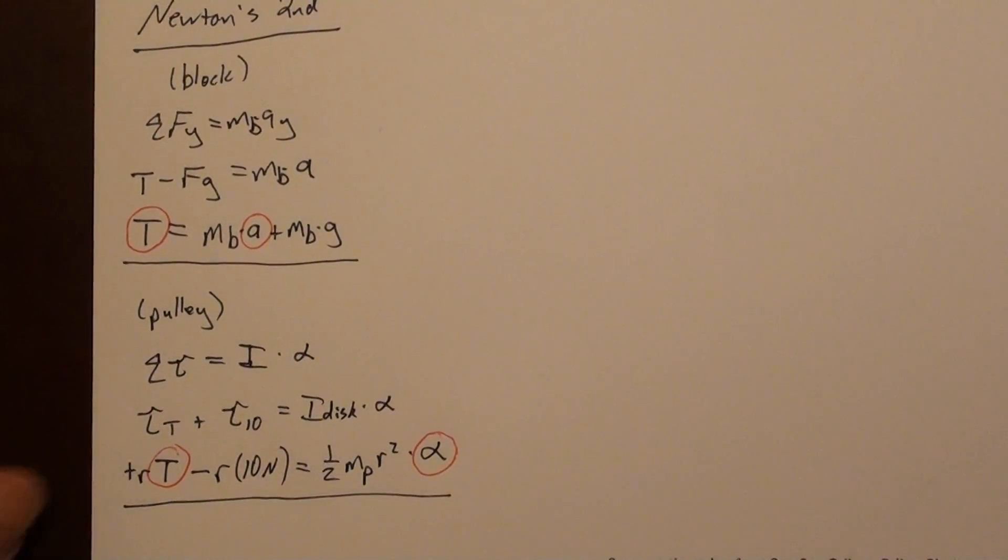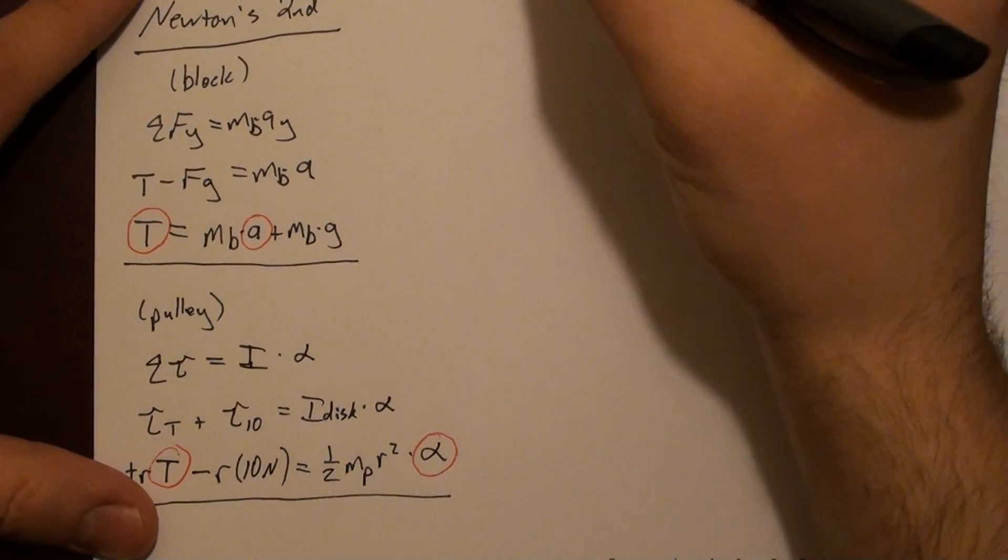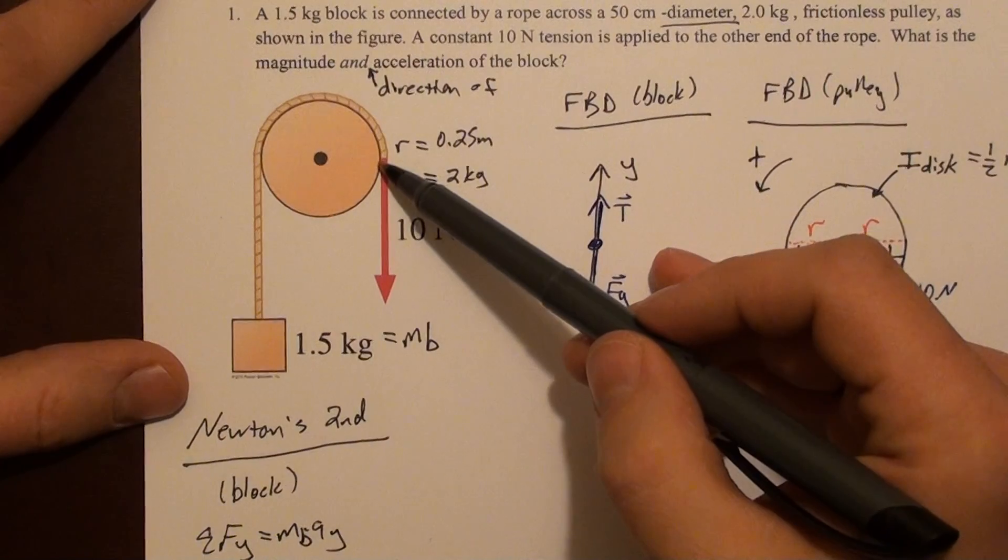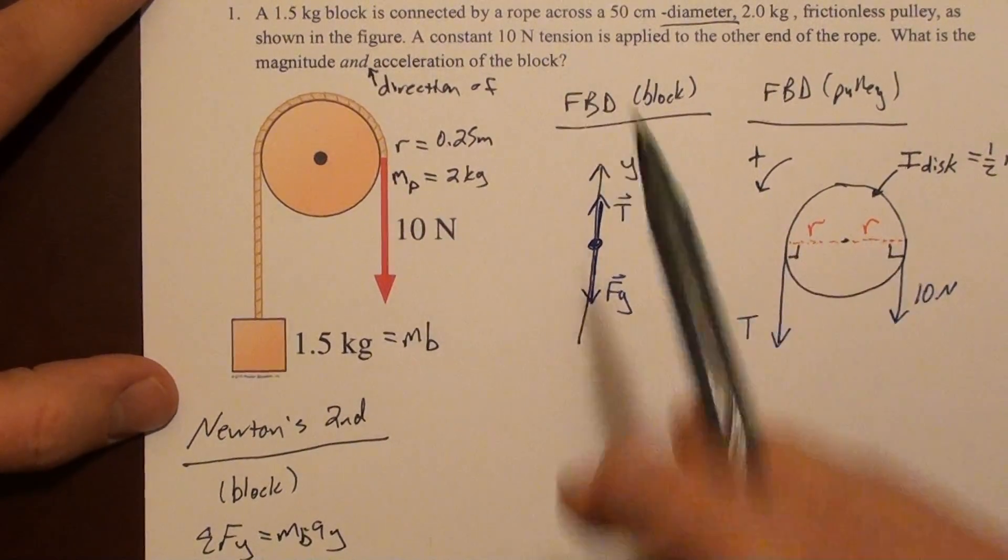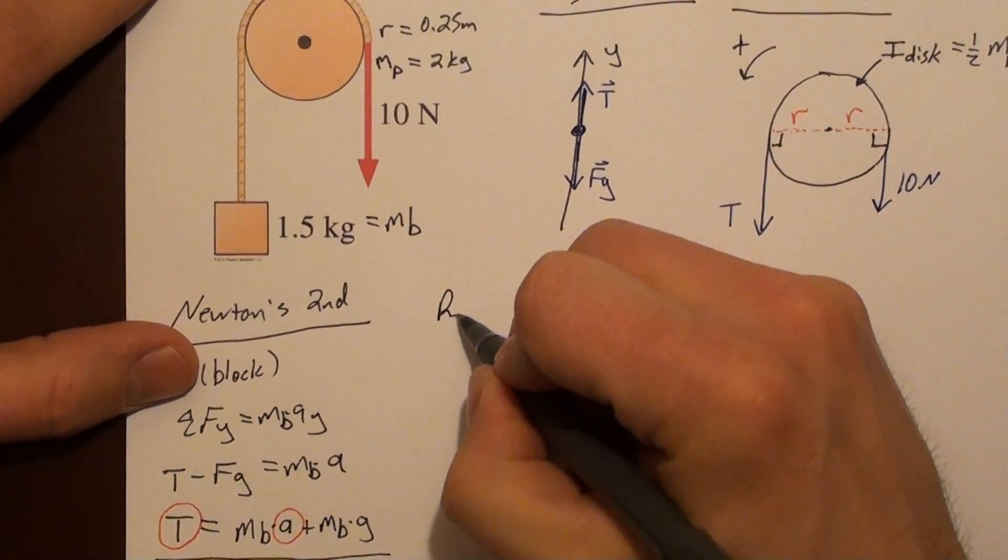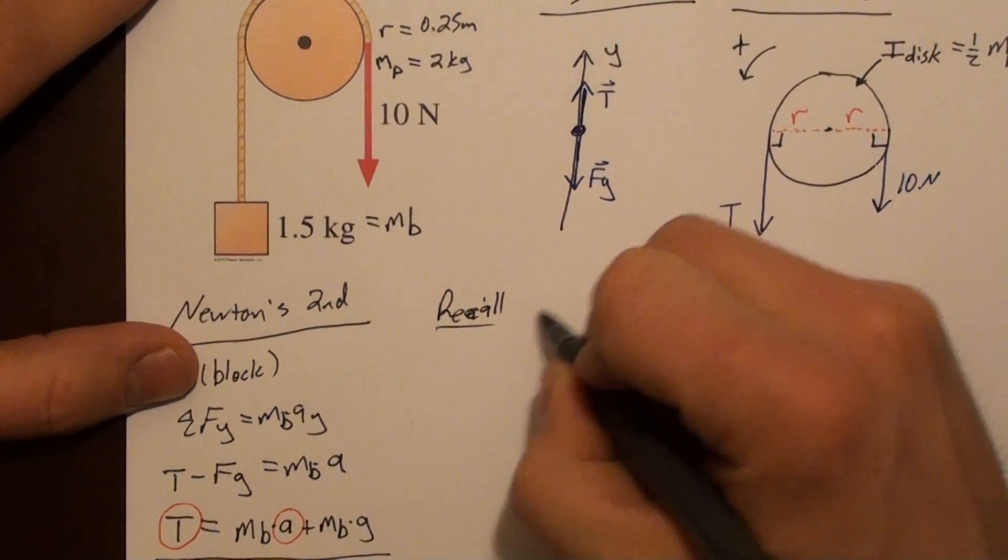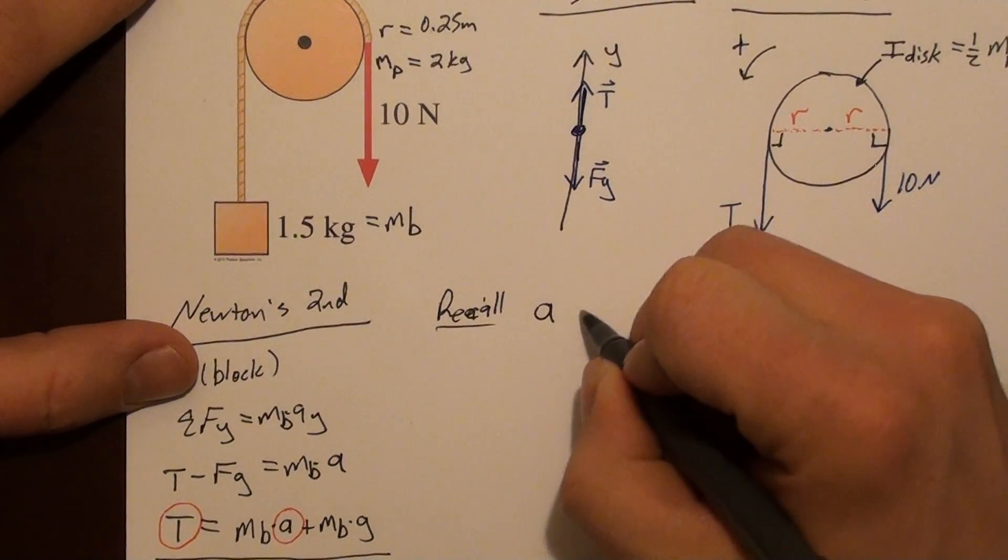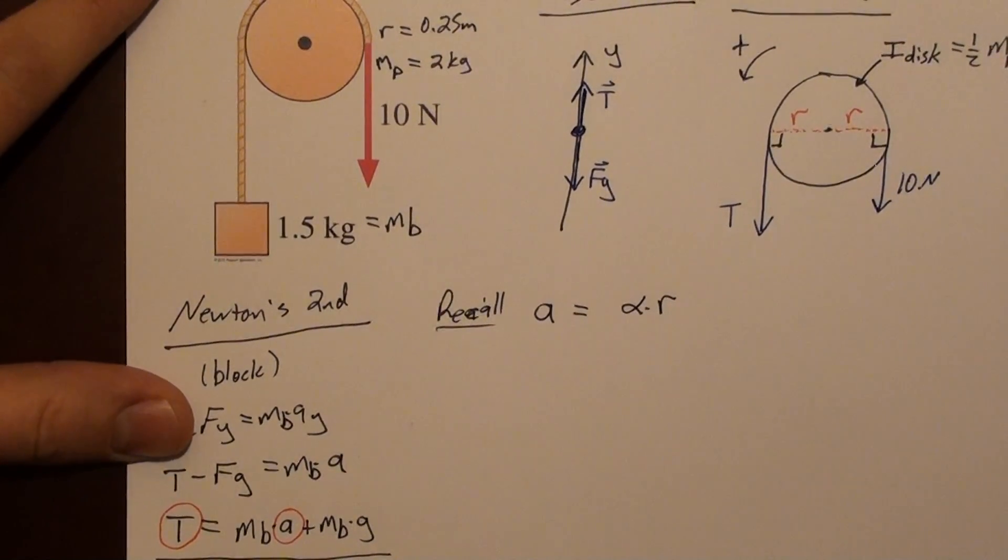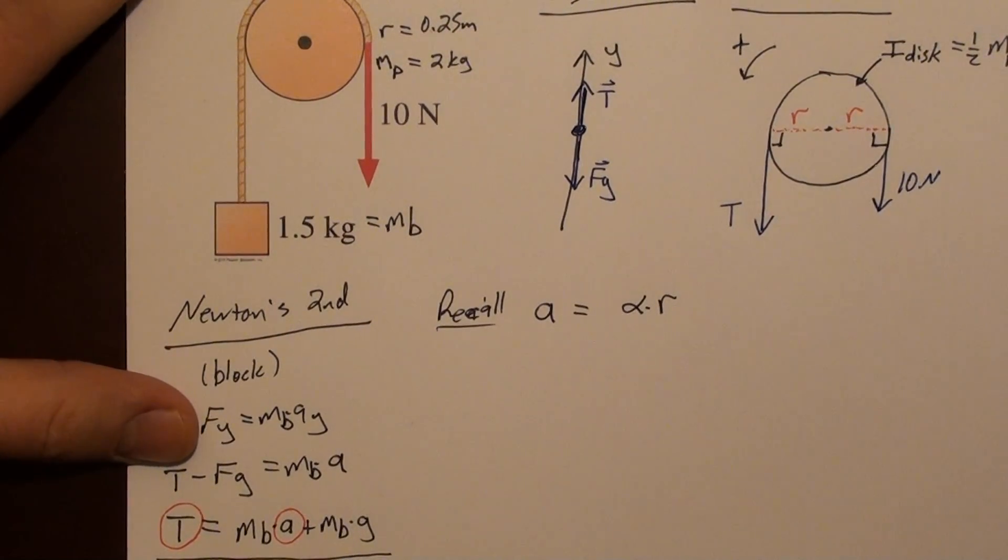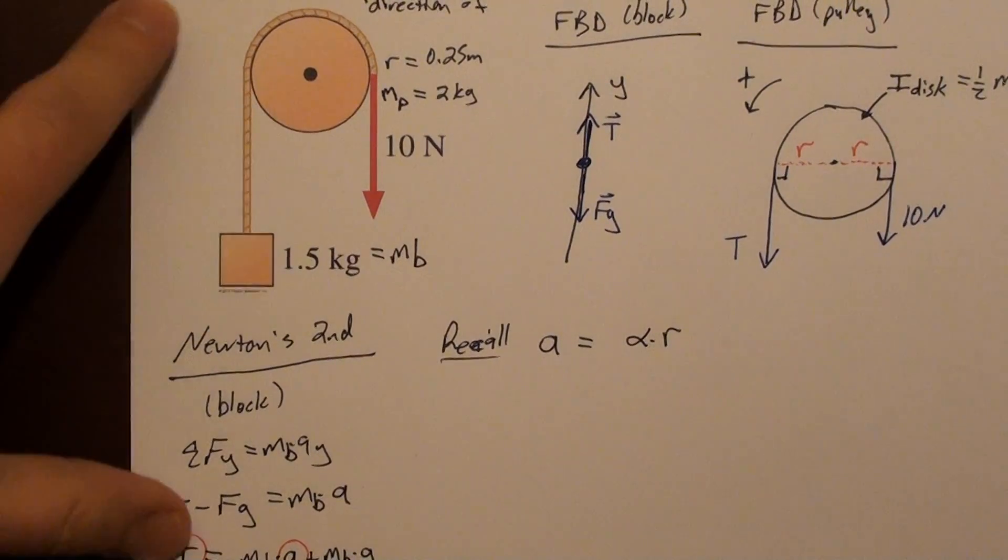So if we remember, tangential acceleration of a point on the outside of a rotating object is related to the angular acceleration of that object. So if we recall that A is alpha R. So that's going to help us in this case. The acceleration of this block is the same as the acceleration of a point on the outside of this cylinder.